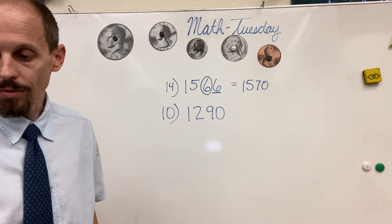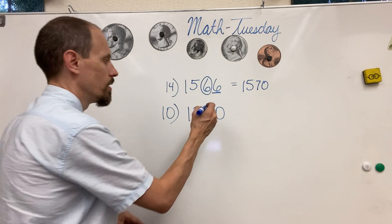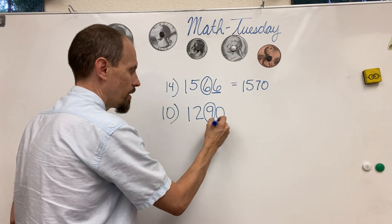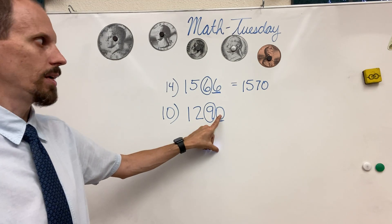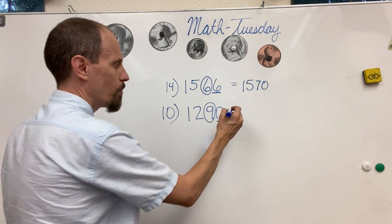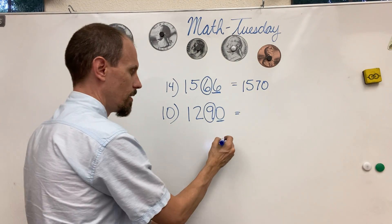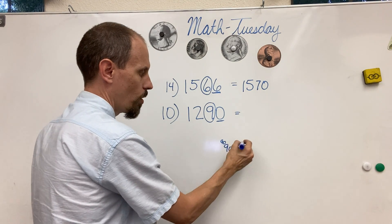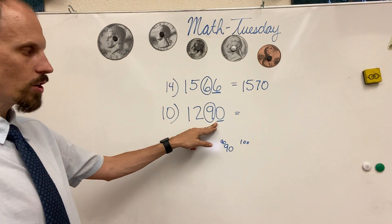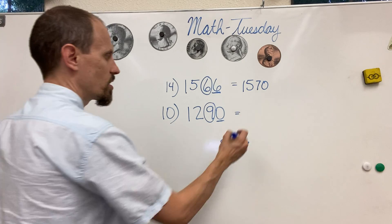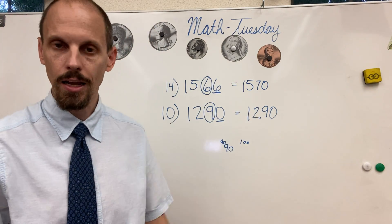Round to the nearest 10 — that's what we're doing. So we find our tens place: ones, tens, hundreds, thousands — ones, tens. Let's go to our tens place and underline the next one. Is this five or higher? No, it's less than five. So what's our number going to be? If you have 90, the closest 10s are 90 and 100. Is it going to round down to 90 or round up to 100? It's just going to be 1,290 — it doesn't even change because 90 is the lowest 10 it can go.